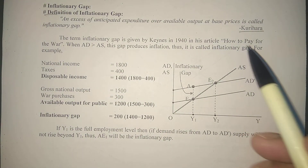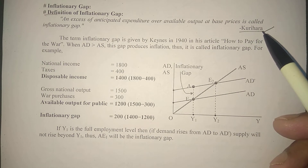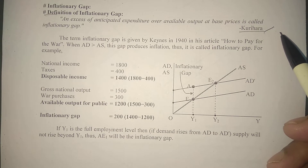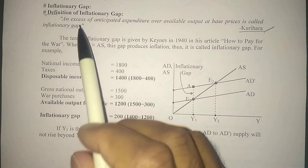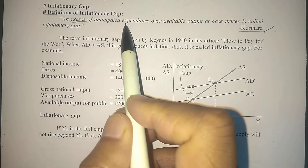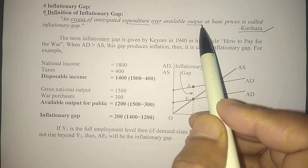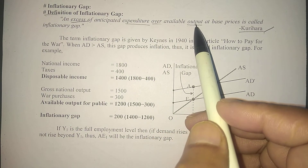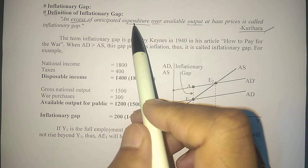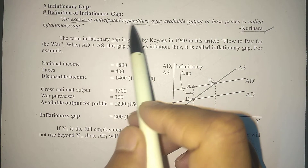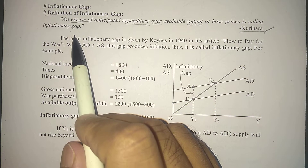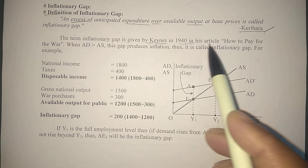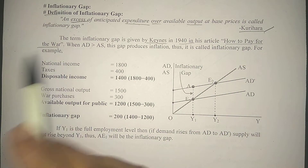According to Kurihara — Kenneth K. Kurihara was a distinguished professor of economic theory at the State University of New York, USA — according to Kurihara, an excess of anticipated expenditure over available output at base prices is called inflationary gap. The term inflationary gap is given by Keynes in 1940 in his article 'How to Pay for the War.'